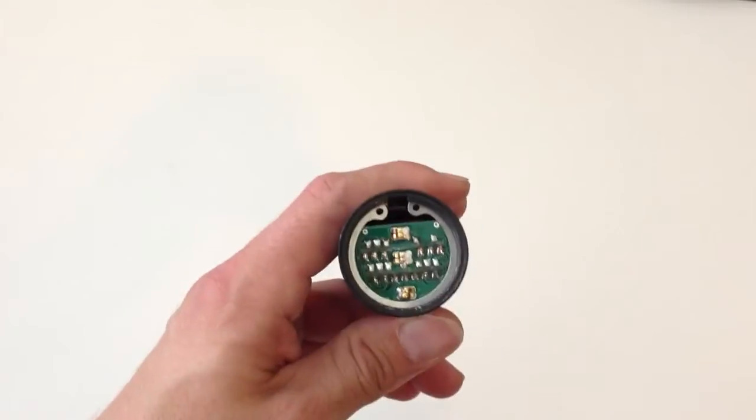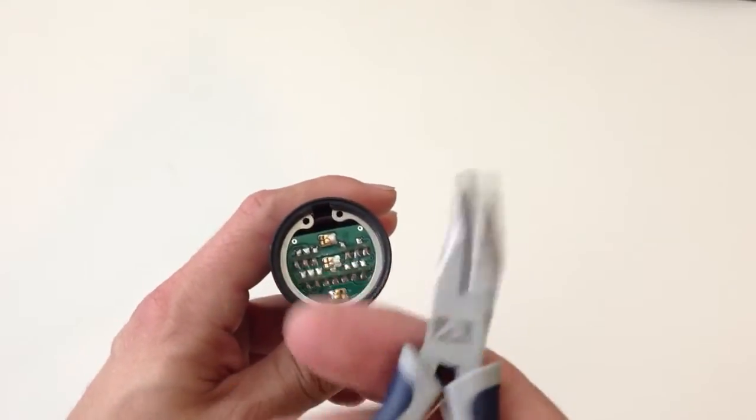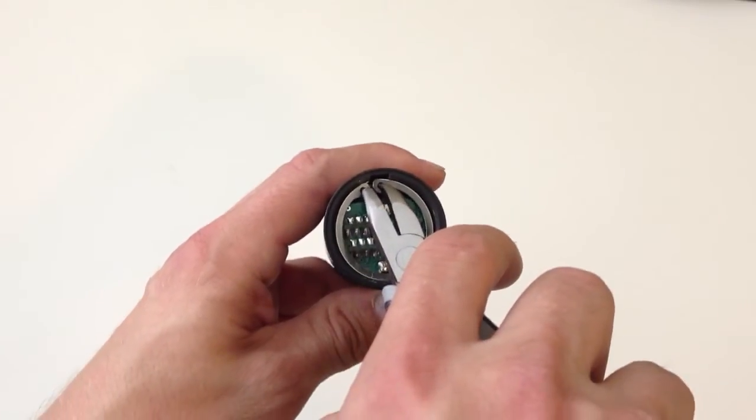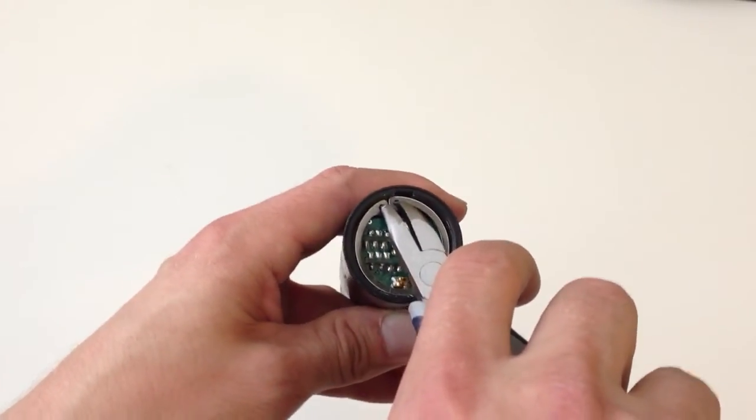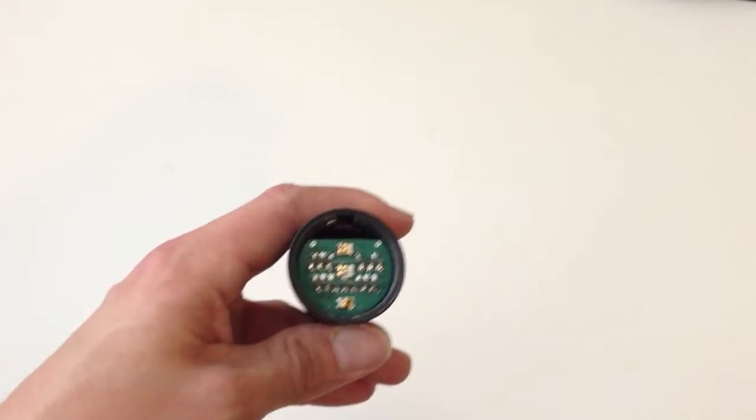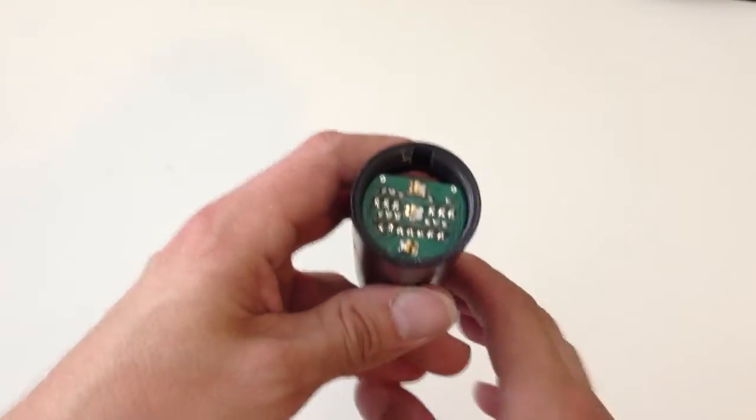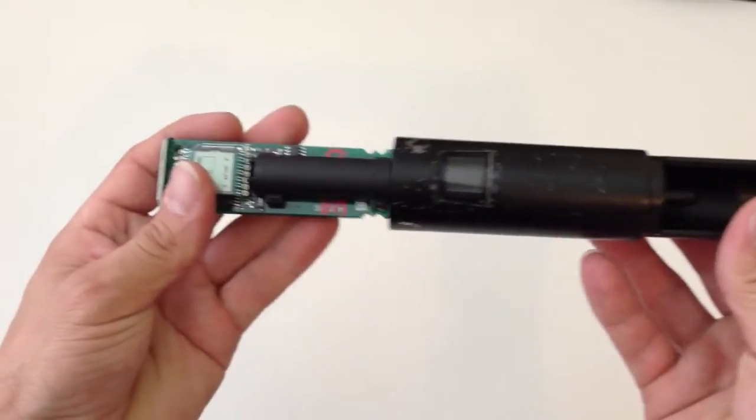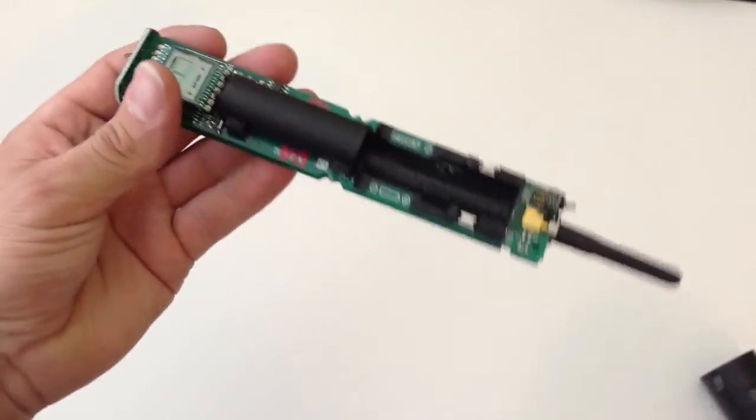We take some needle nose pliers and we will squeeze the ring. It should come out, and now we can push out the electronics of the microphone. So here it is.